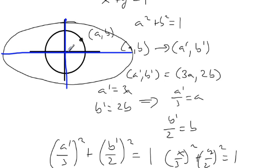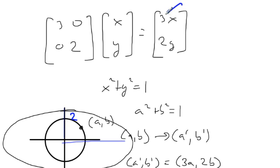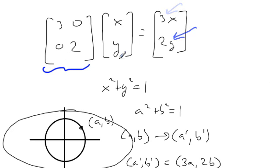So the unit circle with radius 1 has been stretched — tripled in the x-direction so it goes from 0 to 3, and doubled in the y-direction so it goes to 2. Not only do we have a way of interpreting matrices as linear transformations, but we also gain understanding about ellipses: an ellipse is just a unit circle that has been dilated in the x and y directions by different values.